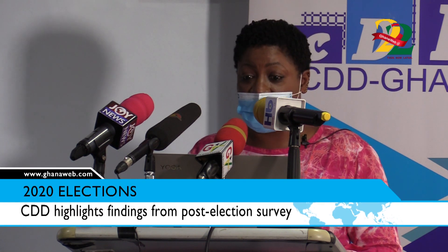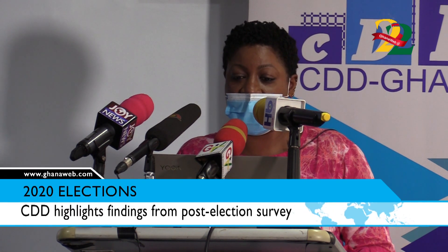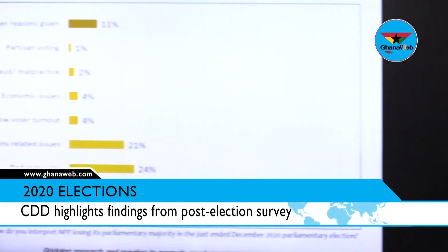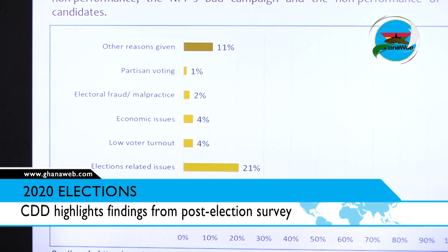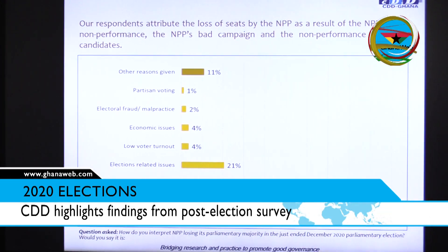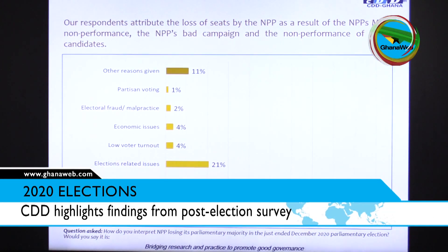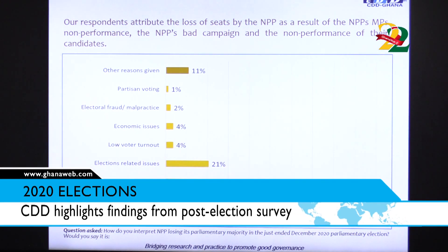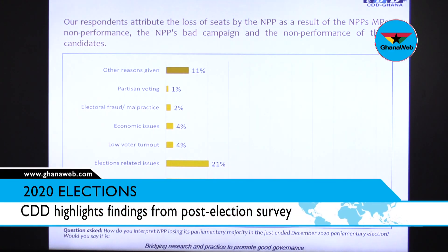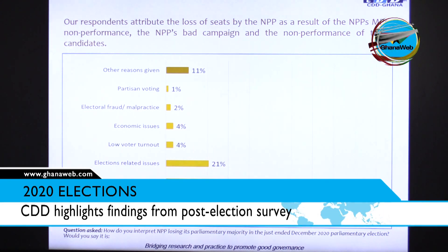We also wanted to find out about the parliamentary seats. Because the NPP did lose a number of seats, respondents attribute those losses to non-performance — specifically the parliamentarians' non-performance, bad campaigning, and poor performance of incumbent candidates. This is the attribution respondents ascribed to why the NPP lost the seats they did in the 2020 election.